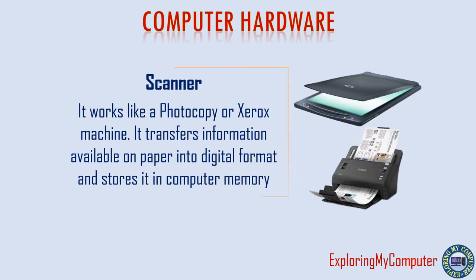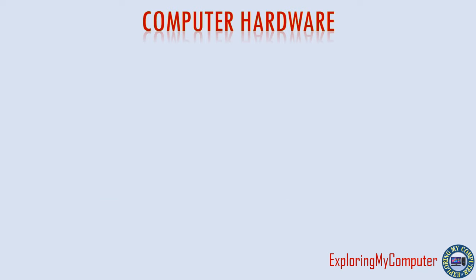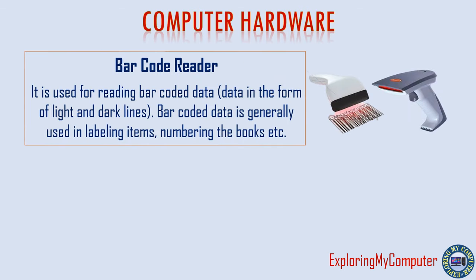Scanner works like a photocopy or Xerox machine. It transfers information available on paper into digital format and stores it in computer memory. Barcode reader is used for reading barcoded data — data in the form of light and dark lines. Barcoded data is generally used in labeling items, numbering books, etc.